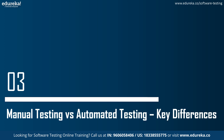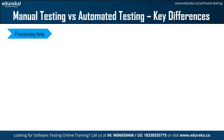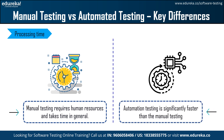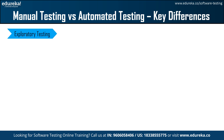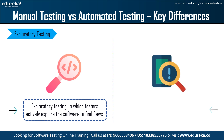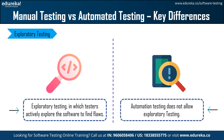We will now take a look at the manual testing versus automation testing key differences. The first difference is processing time. Manual testing requires human resources and takes time in general, whereas automation testing is significantly faster in direct comparison. Next is exploratory testing. In manual testing, testers actually explore the software to find flaws, and real-time reports enable testers to make decisions. Whereas automation testing does not allow exploratory or random testing — it is ideal for repeatable and predefined circumstances.